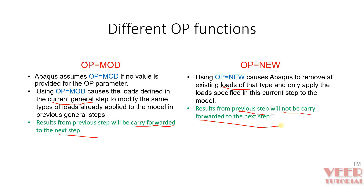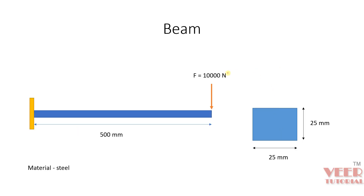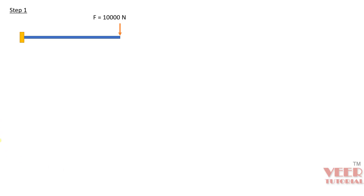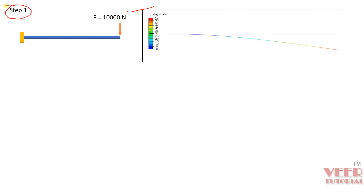Let's learn about this with a practical example. We are considering a beam with specific dimensions, cross-section, and material. I have already performed an analysis for this beam. In the first case, I applied a load of 10,000 Newton in the vertical downward direction — this is step 1. You can see the deformed shape and the undeformed shape, and the maximum displacement U is 61.